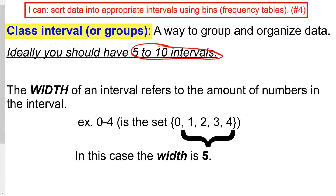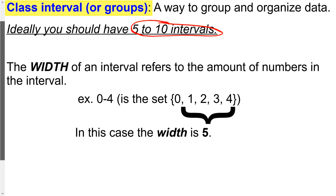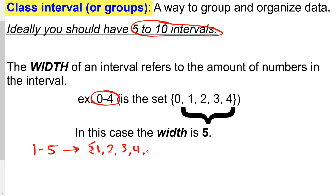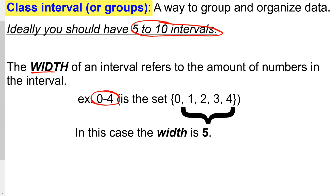An interval is just like a number range — for example, 0 through 4 — and basically any data between 0 and 4 gets a tally mark. If I had an interval from 1 through 5, that includes all numbers 1, 2, 3, 4, and 5. All intervals in a frequency table need to have the same width. We measure width by how many numbers are in the interval. The interval 0 through 4 looks like width 4, but it actually has a width of 5 because it contains 0, 1, 2, 3, and 4 — that's 5 numbers.